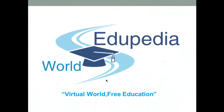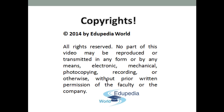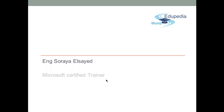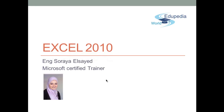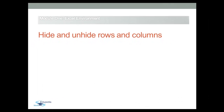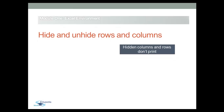Welcome to the Eduopedia World virtual world free education. My name is Raya Saeed, Microsoft Certified Trainer. You can hide and unhide rows or columns in Excel when you don't want part of the worksheet to be visible, or when you don't want certain data such as salary or private information to appear in printed reports. Hidden rows and columns don't print.